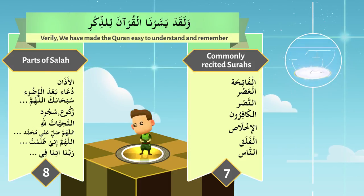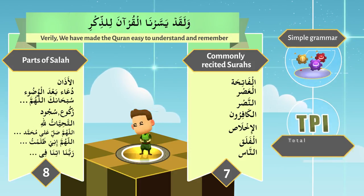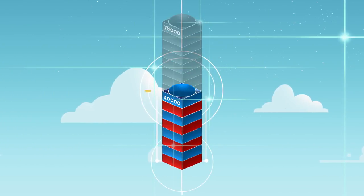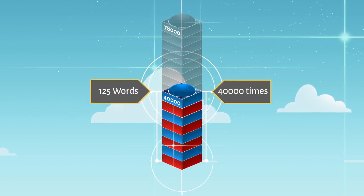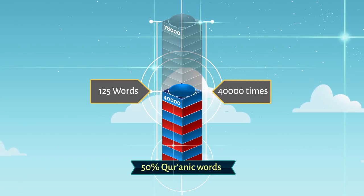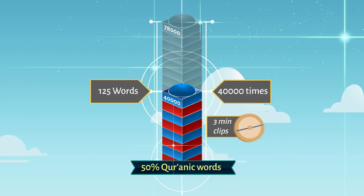Along with extremely simple grammar using TPI, you learn 125 words that occur 40,000 times — that is 50%, or half the words in every line. All of that in just three-minute clips.